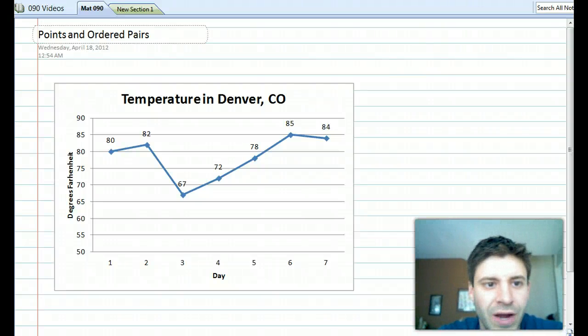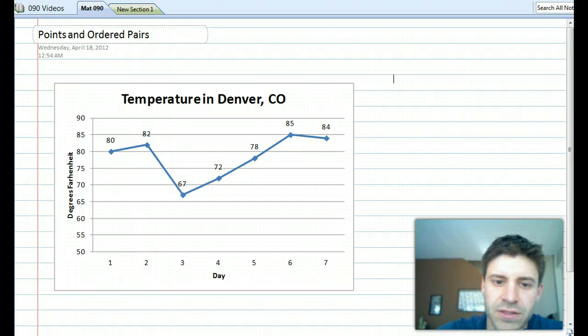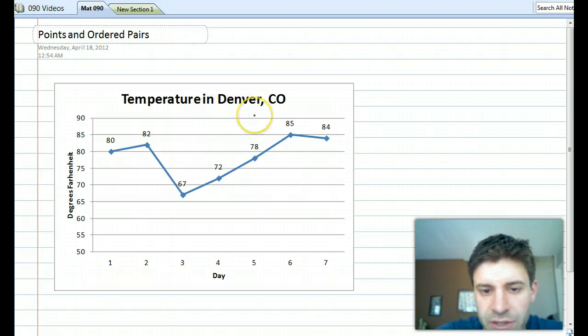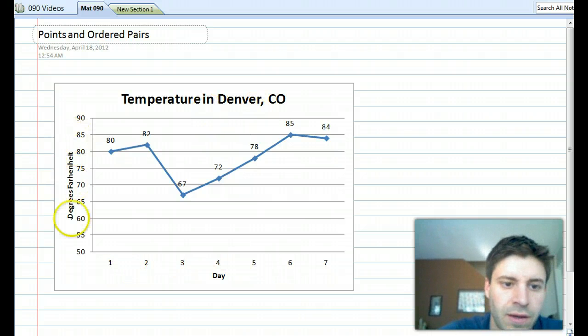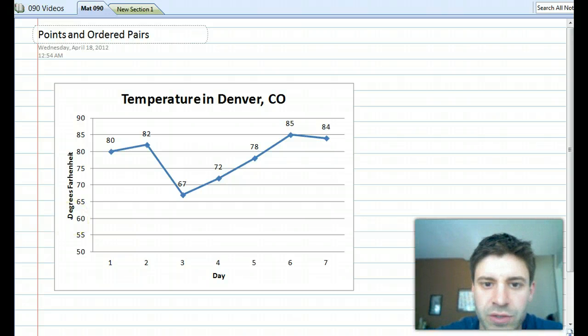In this video we're going to be talking about graphing points and ordered pairs, and we're going to start by looking at this little chart that I just made up. You see charts and graphs like this all the time in your everyday lives. This one in particular is labeling the temperature in Denver, Colorado over a seven day period, and these degrees are measured in Fahrenheit.